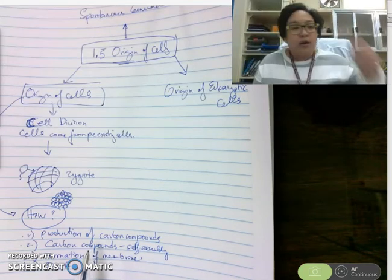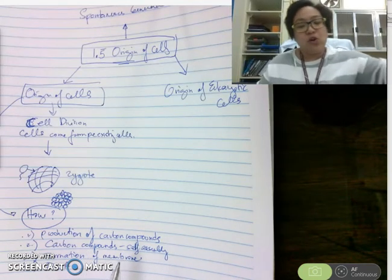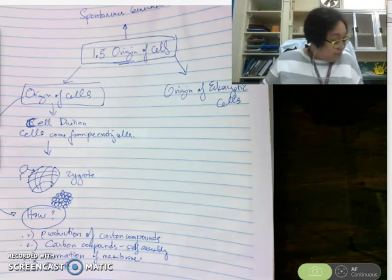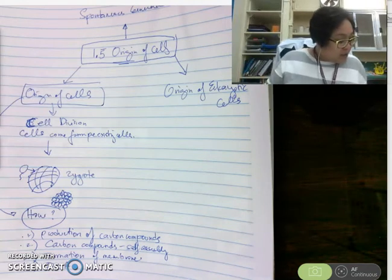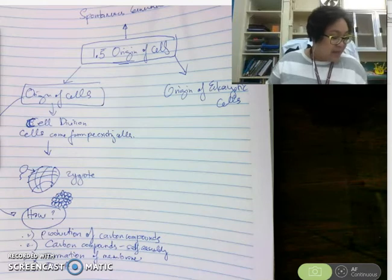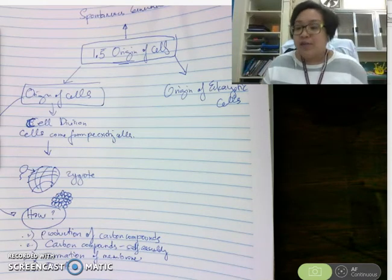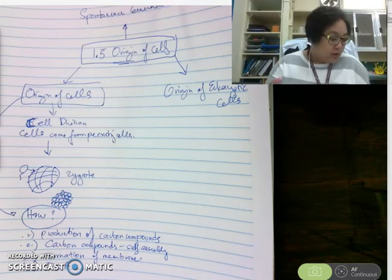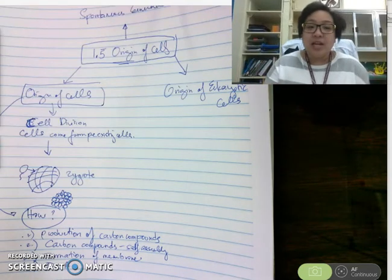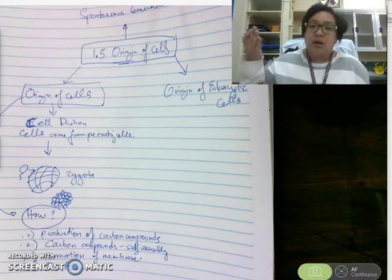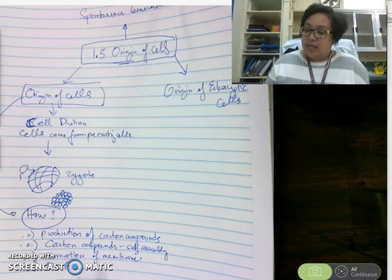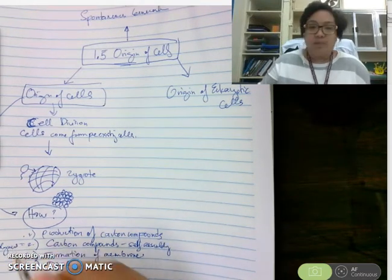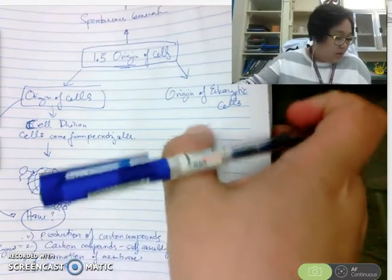Experiments have shown that if you introduce electric charge to different gases — for example, ammonia, hydrogen, or methane gas — and condense them, you can form amino acids. The only thing needed was the right environment, such as lightning in the atmosphere, to form carbon compounds. Second, carbon compounds can self-assemble and form polymers.